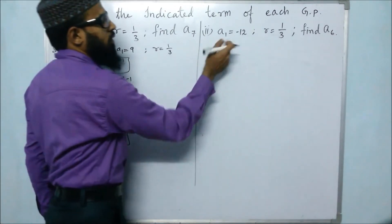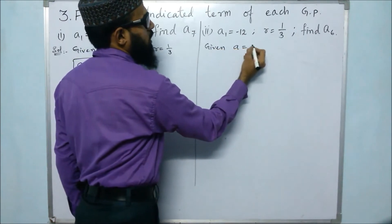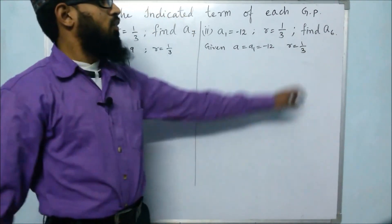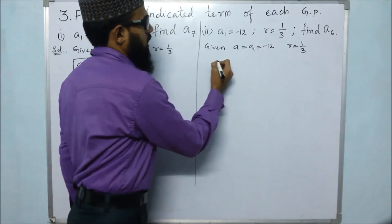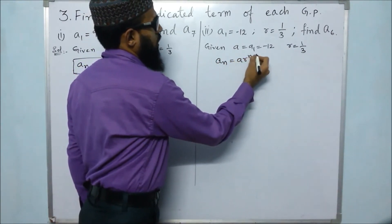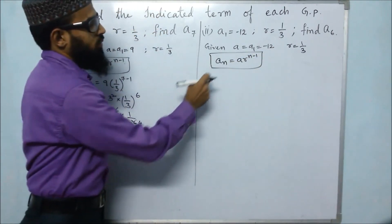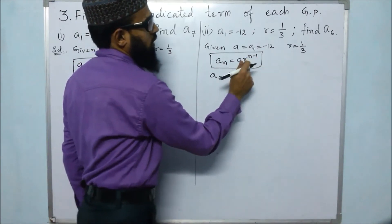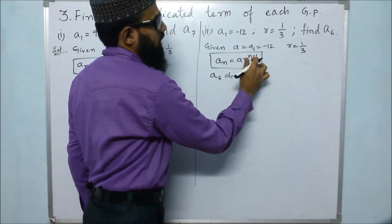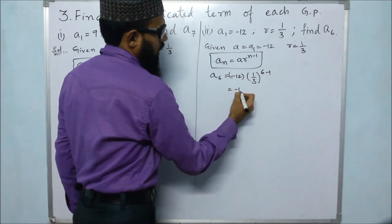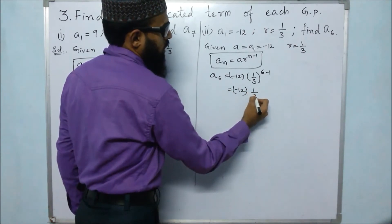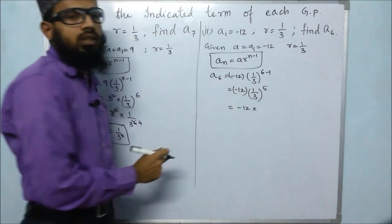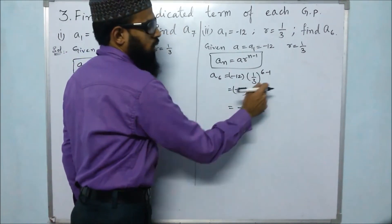Next, the first term is minus 12 and the common ratio is 1 by 3. We have to find the sixth term. Using the formula a_n equals a times r to the power of n minus 1, we substitute n equals 6. So a6 equals minus 12 times 1 by 3 to the power of 6 minus 1, which is minus 12 times 1 by 3 to the power of 5.